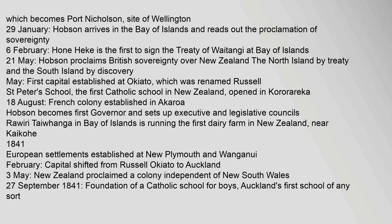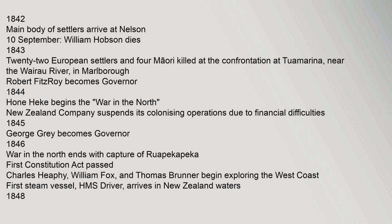1841: European settlements established at New Plymouth and Whanganui. February: Capital shifted from Russell (Okiato) to Auckland. 3 May: New Zealand proclaimed a colony independent of New South Wales. 27 September 1841: Foundation of a Catholic school for boys, Auckland's first school of any sort.